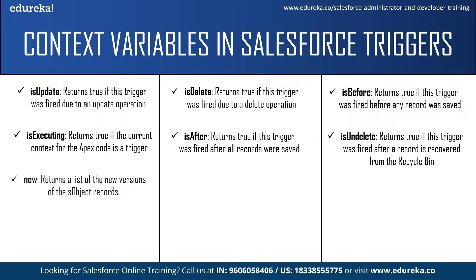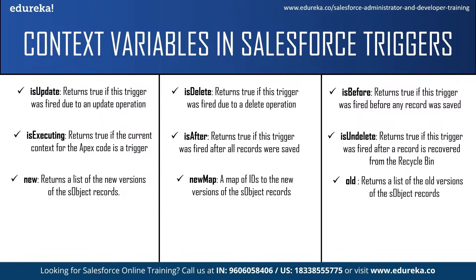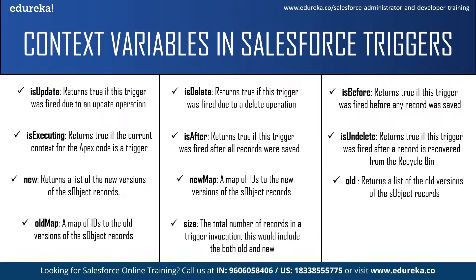Next we have the new context variable — this returns a list of new versions of the Salesforce object records. It is only available in insert, update, and undeleted triggers, and records can only be modified in before triggers. After that we have newMap — a map of IDs to the new version of the sObject records, only available in before update, after insert, after update, and after undeleted triggers. We also have old — a list of old versions of the sObject records, available in update and delete triggers. And oldMap — a map of IDs to the old version of sObject records, also available in update and delete triggers. Finally, size returns the total number of records in a trigger invocation, including both old and new.